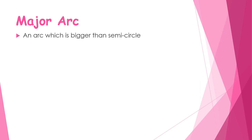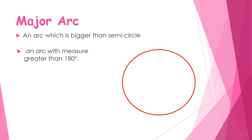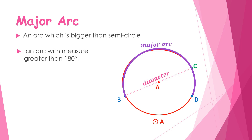A major arc is an arc bigger than a semicircle, with a measure greater than 180 degrees. On Circle A, with points B and C forming a diameter and point D also on the circle, the arc formed by arc BCD is greater than a semicircle. Therefore, arc BCD is a major arc of Circle A.